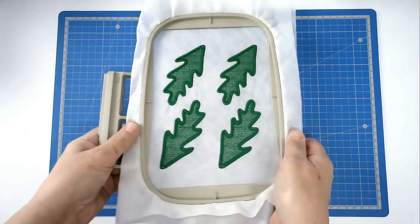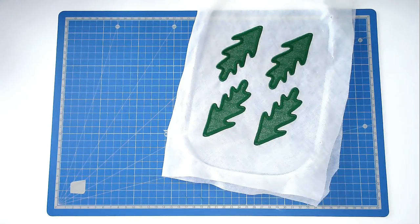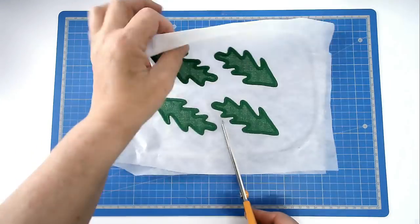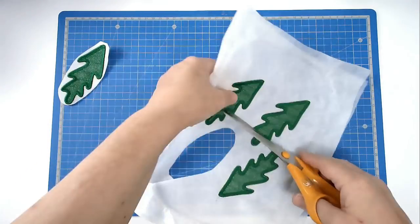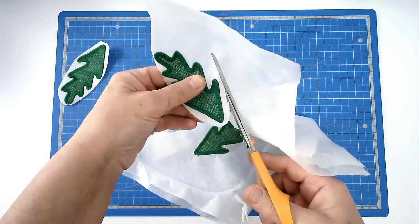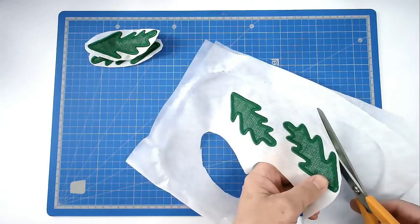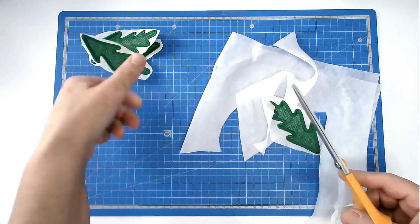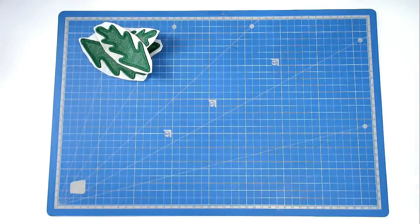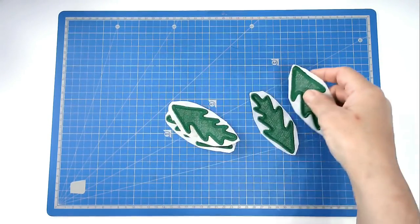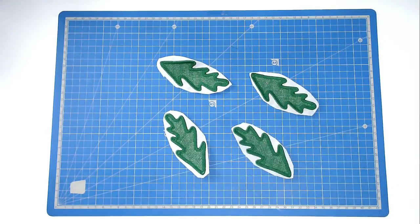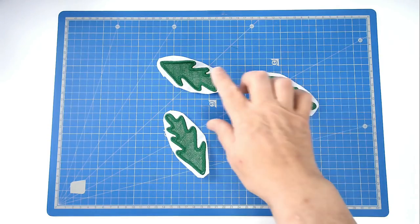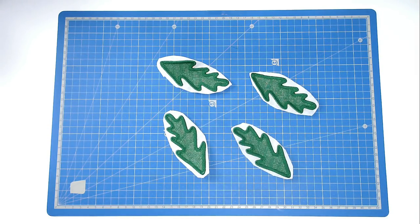So that's the leaves done. We can now free this from the hoop and just cut these out. And that's our leaves done. You can now set these aside and we will dissolve the excess stabilizer in a little while.